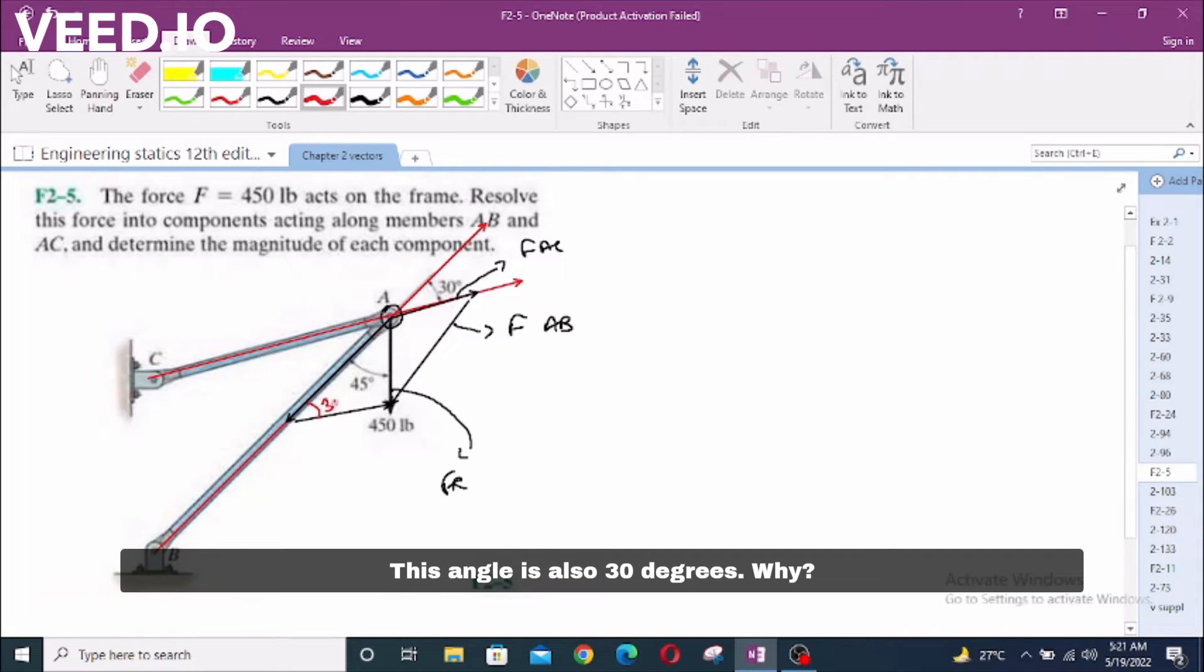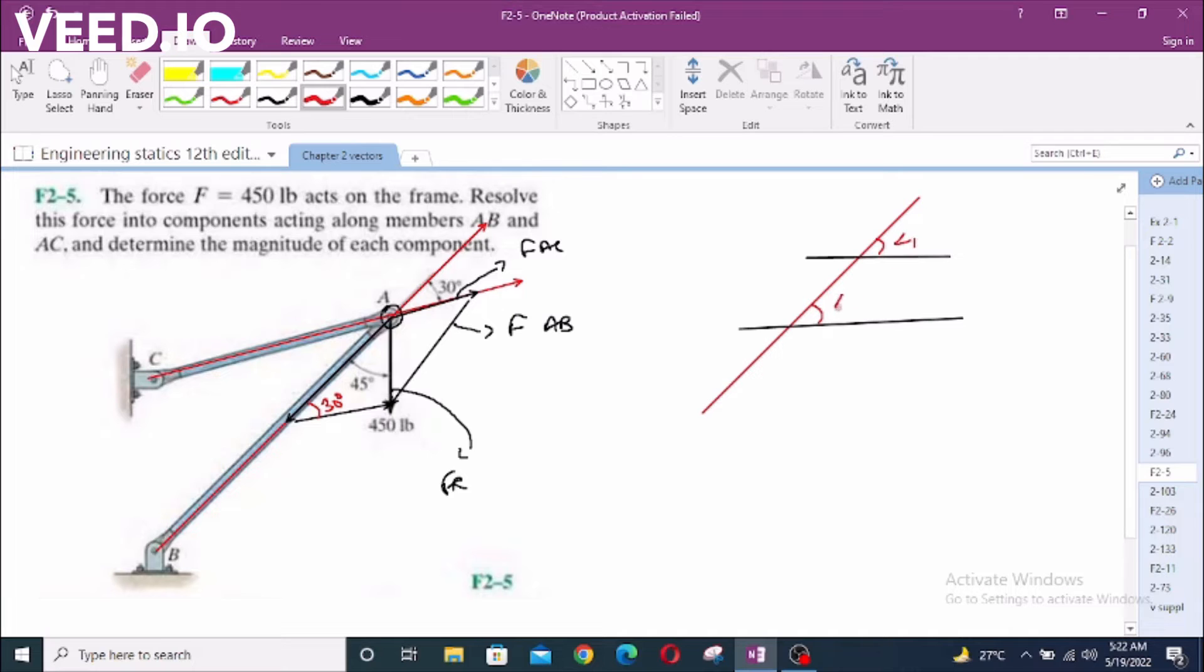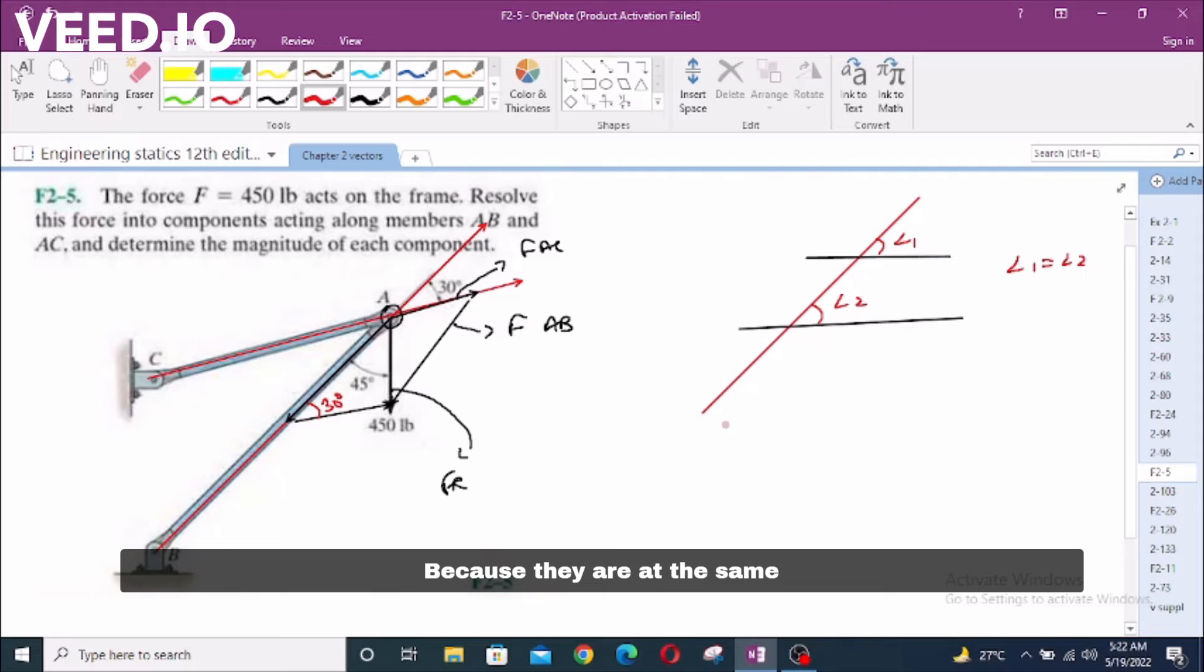This angle is also 30 degrees. Why? Because if we consider a line and if we bisect it just like this, and then we again divide it into two pieces, these two angles are equal because they are at the same inclination from the horizontal axis.